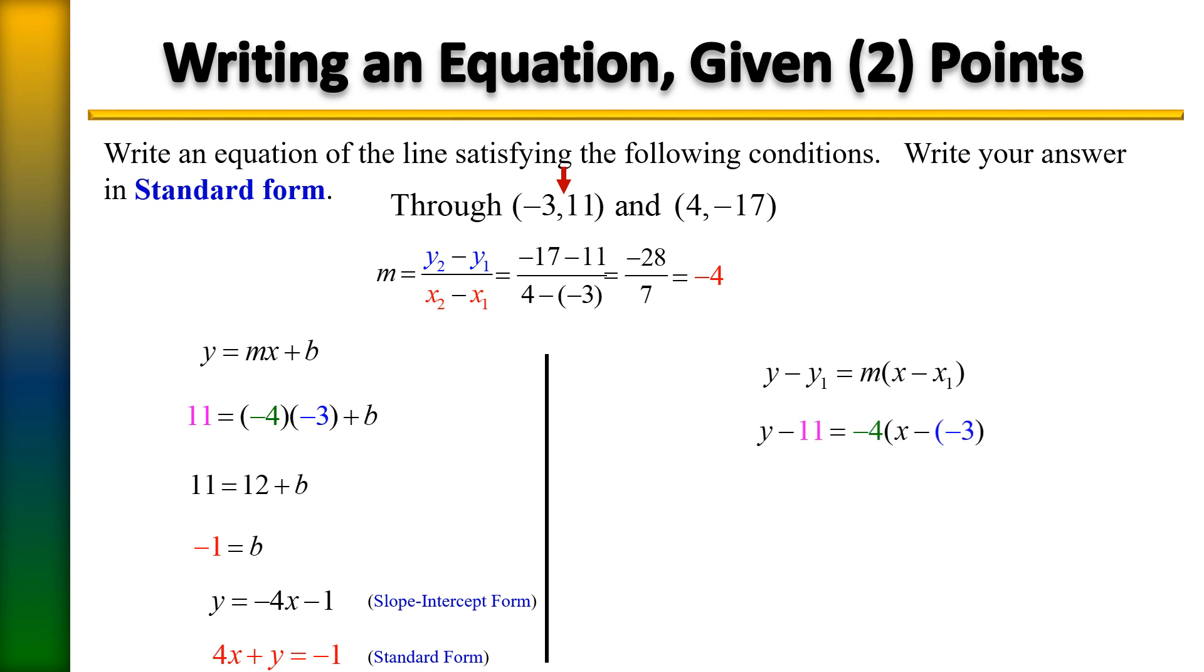It's going to look like so. Remember, double negatives become positives. We're going to apply the distributive property on the right side. That's -4 times x and then -4 times positive 3. Lastly, we're going to add 11 to each side. And notice we have the same answer as we did using the y equals mx plus b.